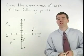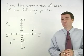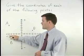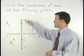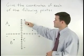When finding the coordinates of a given point, be very careful with your signs. Remember that on the x-axis, left means negative and right means positive. And on the y-axis, down means negative and up means positive.